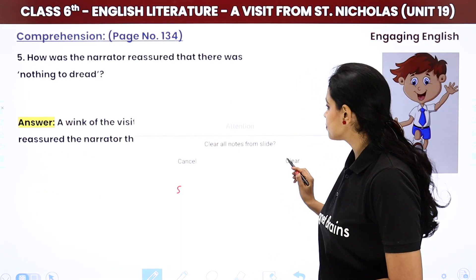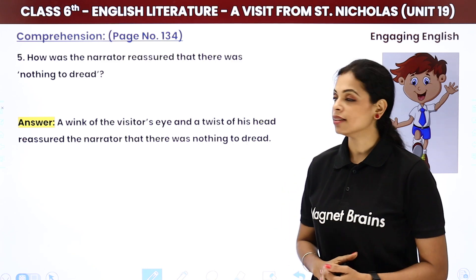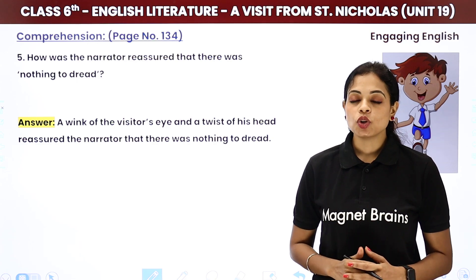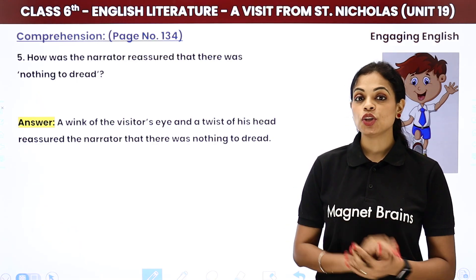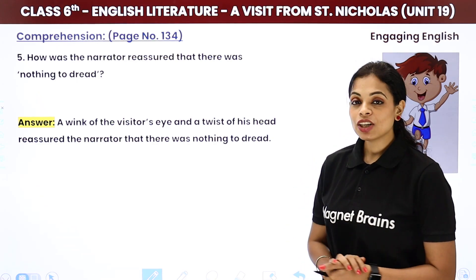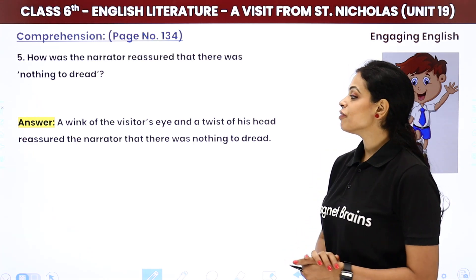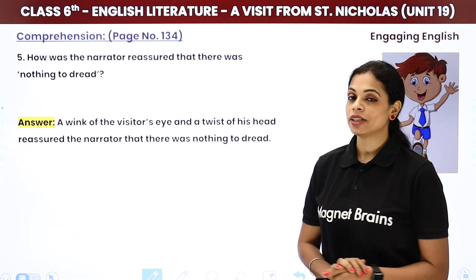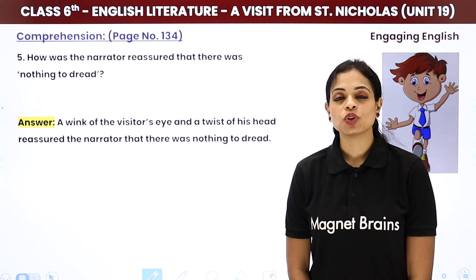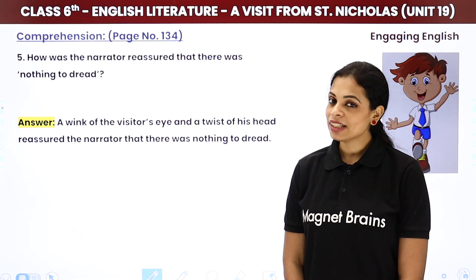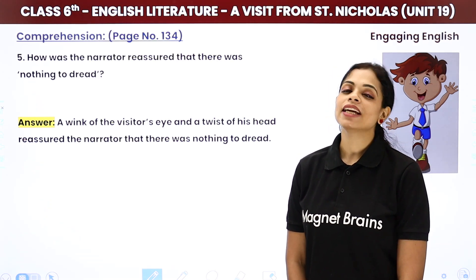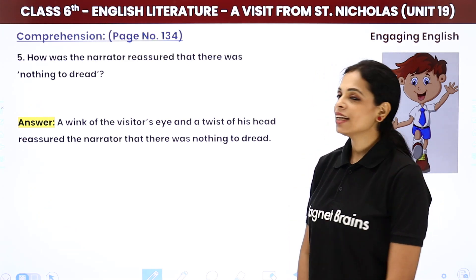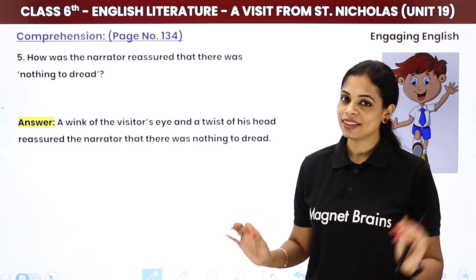How was the narrator reassured that there was nothing to dread? A wink of the visitor's eye and a twist of his head reassured the narrator that there was nothing to dread. As soon as the narrator looked at Santa Claus, Santa winked and twisted his head — and from that the narrator knew there was nothing to be afraid of.